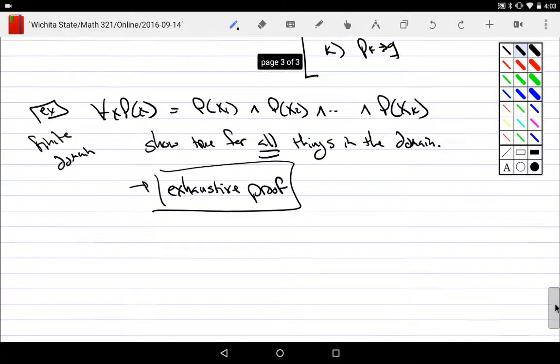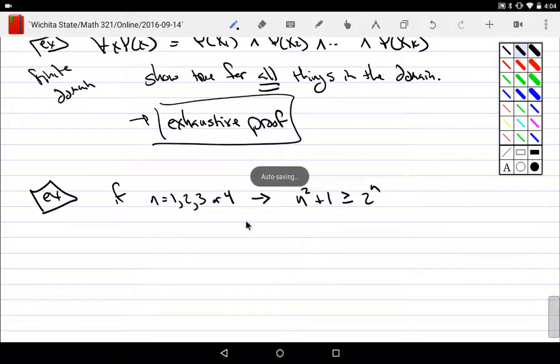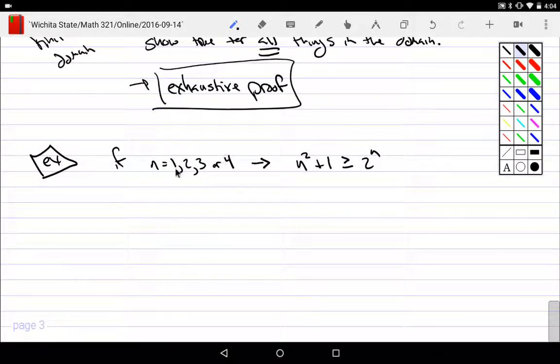All right, let's try an example of that. An example of that would be things like if, say, n was equal to 1, 2, 3, or 4, then n squared plus 1 is going to be greater than or equal to 2 to the nth. Now normally the exponential will become bigger, but for these few numbers, whenever we take this, we would look at this and say, just kind of go through it. And for these particular values, is this true? We would do 1, 2, 3, or 4.